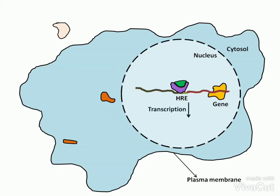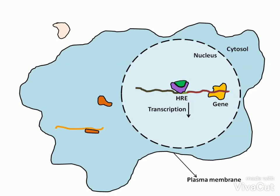After transcription, an mRNA is formed. This mRNA passes to the cytosol via the nuclear pore. In the cytosol, the smaller subunit and larger subunit of the ribosome get assembled on the mRNA to translate it into a new protein. The new protein changes the function of the cell.